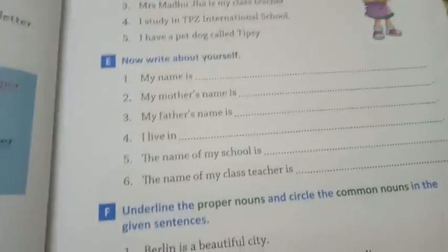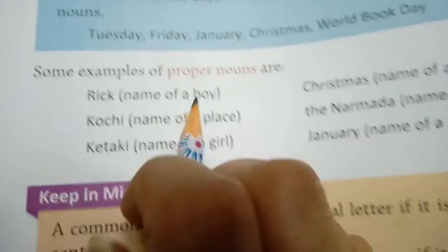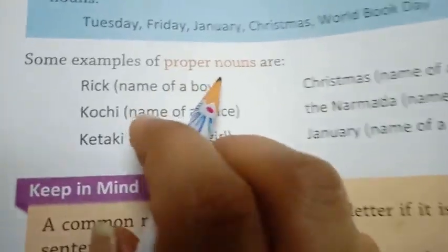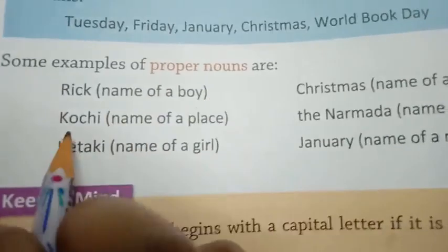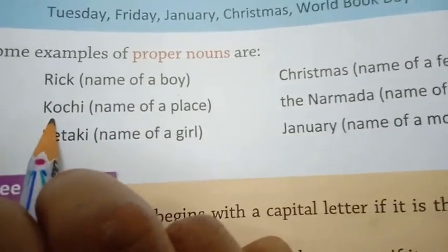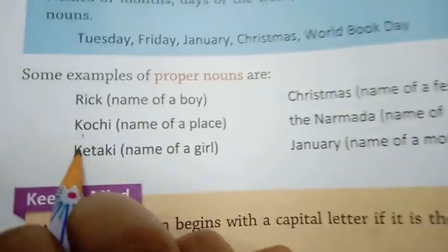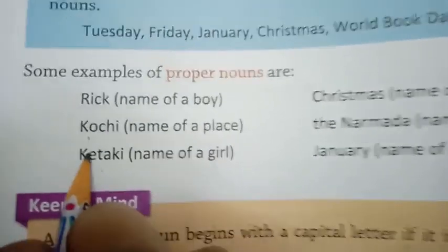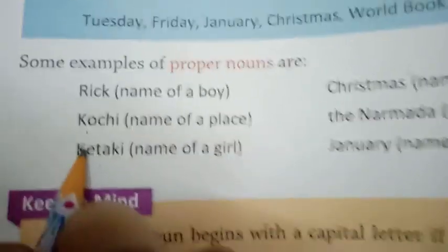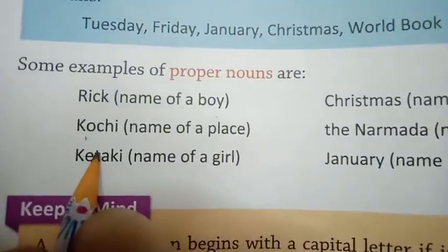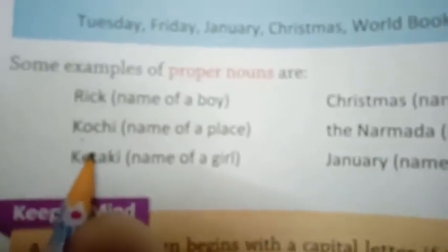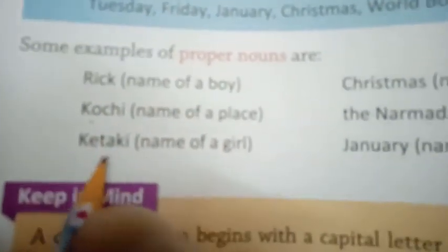So here are some examples of proper nouns. Kochi — Kochi is a name of a place, that's why it is a proper noun. Jaipur — Jaipur is also a name of a place, that's why Jaipur is a proper noun. If I say 'city,' it can be any city, but if I say 'Jaipur,' then Jaipur is a proper noun.